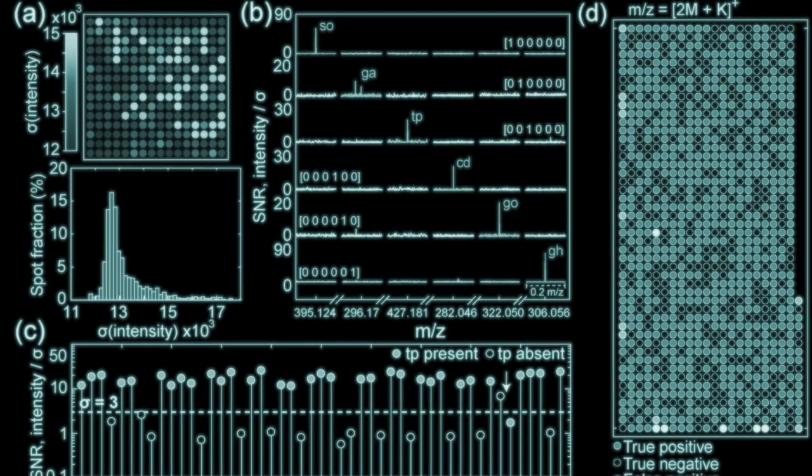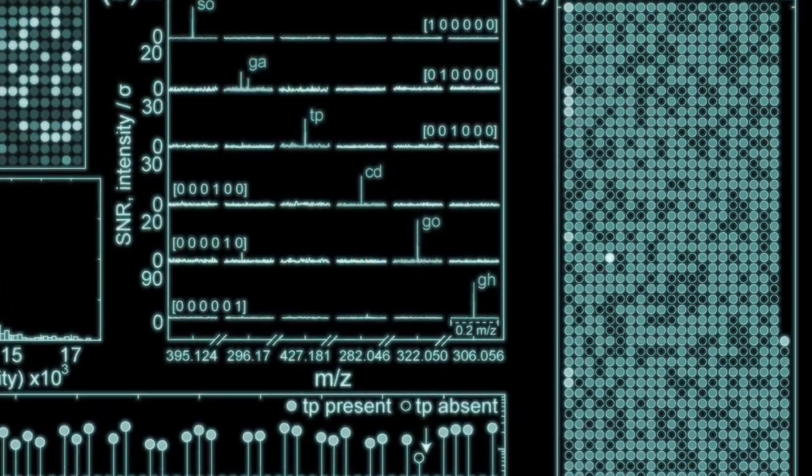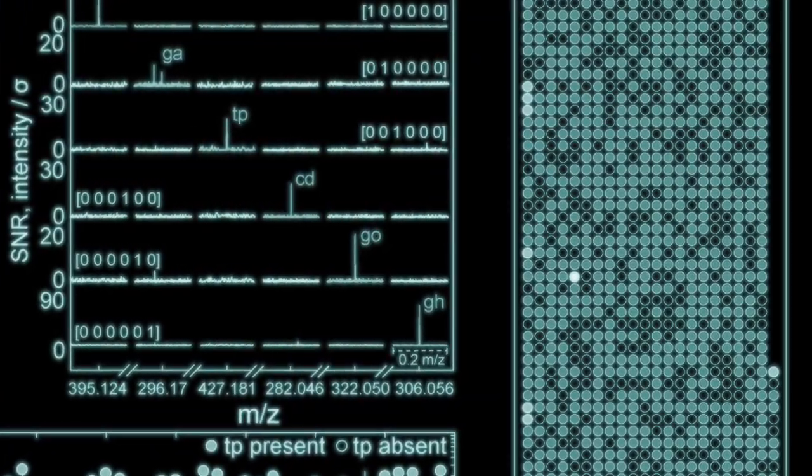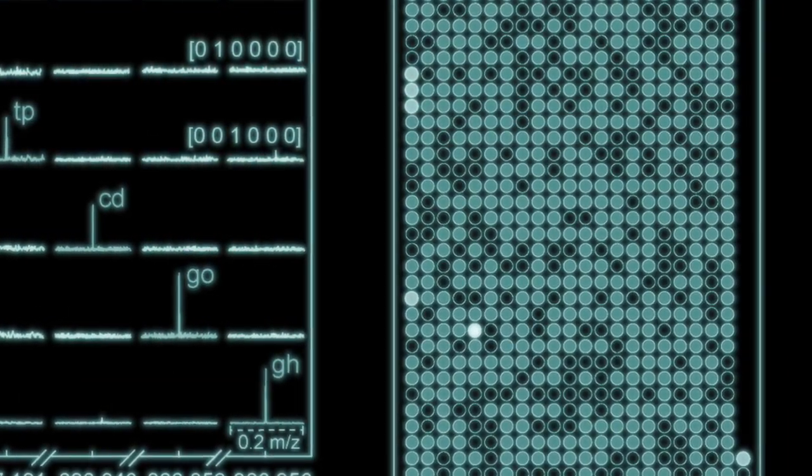They then dried these plates, leaving tiny spots of crystallized molecules. A mass spectrometer machine was then used to analyze the crystallized molecules and in particular weigh each of them.